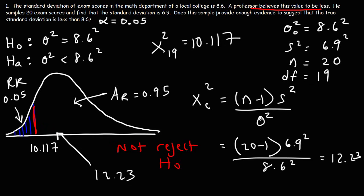Therefore, we could say that this sample does not provide enough evidence to reject the null hypothesis since our calculated chi-square value exceeds our critical chi-square value given that we have a left-tail test.